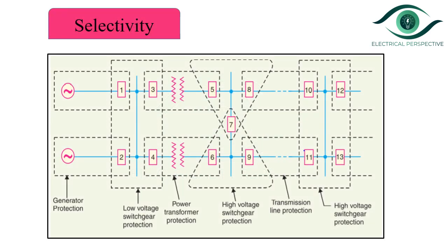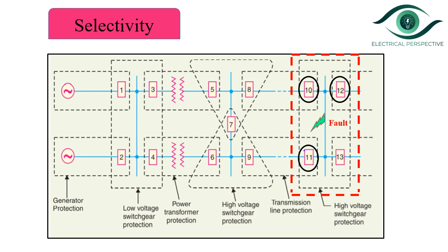Consider a system where each element is provided with its separate zone of protection. Circuit breakers are located in the connections to each power system element to disconnect only that part in case of a fault. If a fault occurs at the bus bar on the last zone — please refer the figure on the screen — then to achieve selectivity, only the circuit breakers nearest to the fault, i.e., circuit breakers 10, 11, 12, and 13, should open, isolating only the faulty section without affecting the rest of the system. Any other breaker operating to clear this fault would cause disconnection of more of the system than necessary.